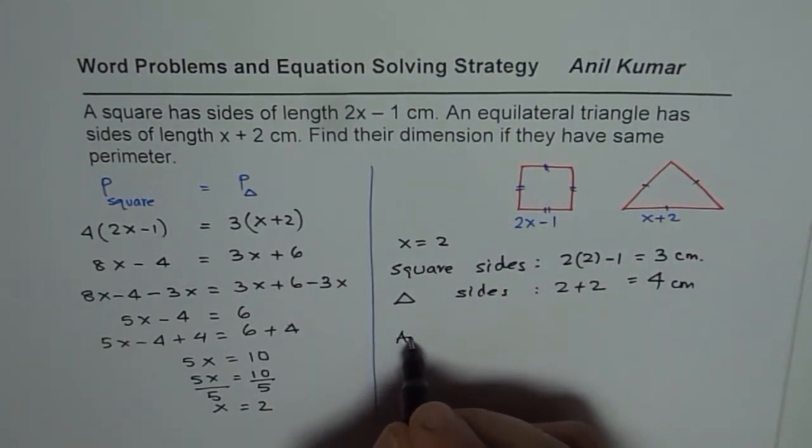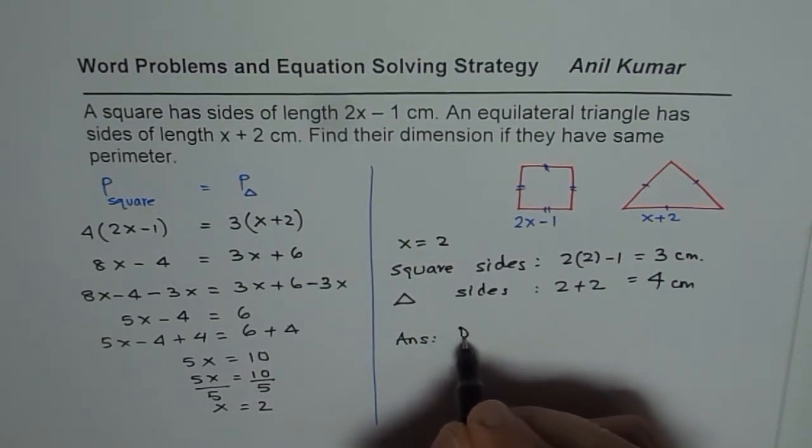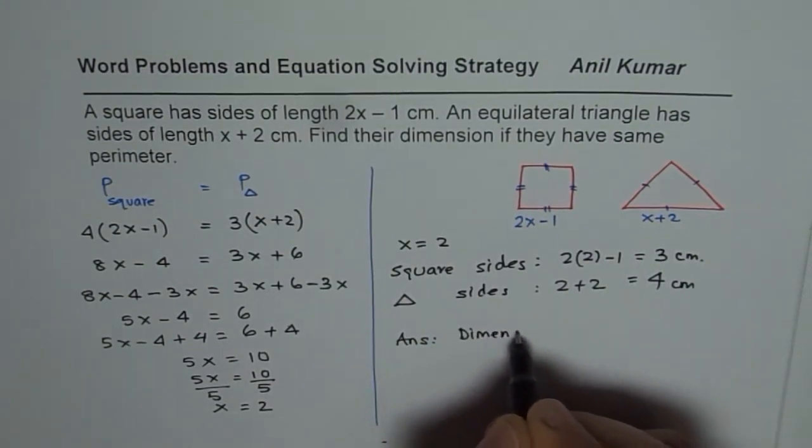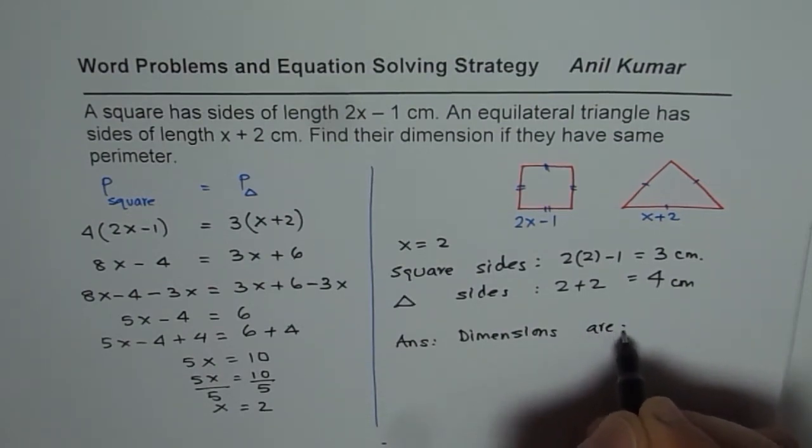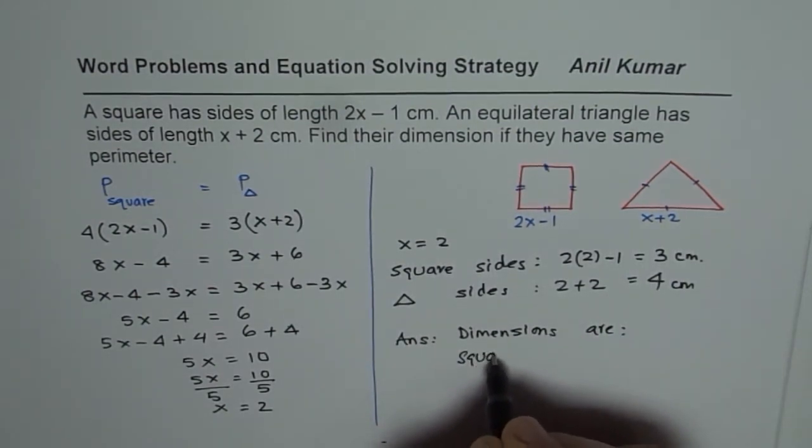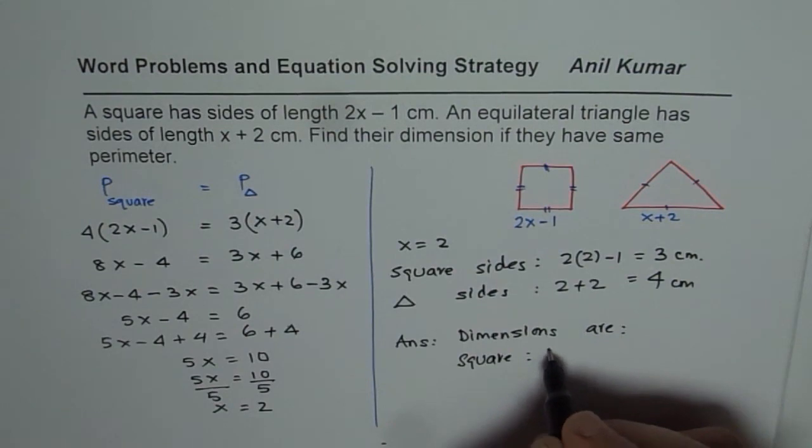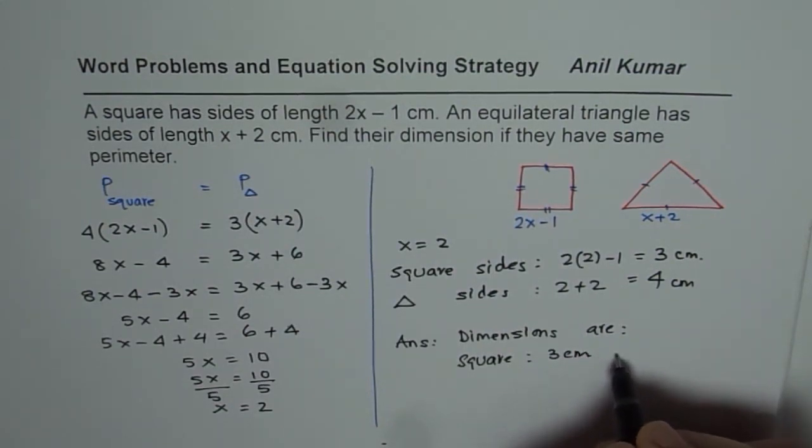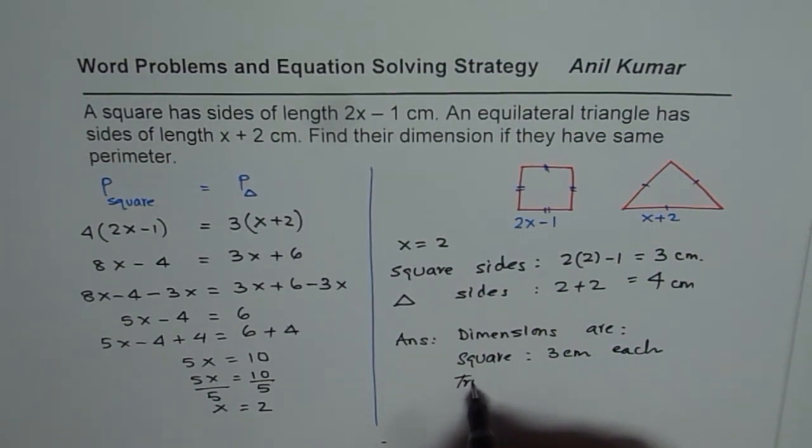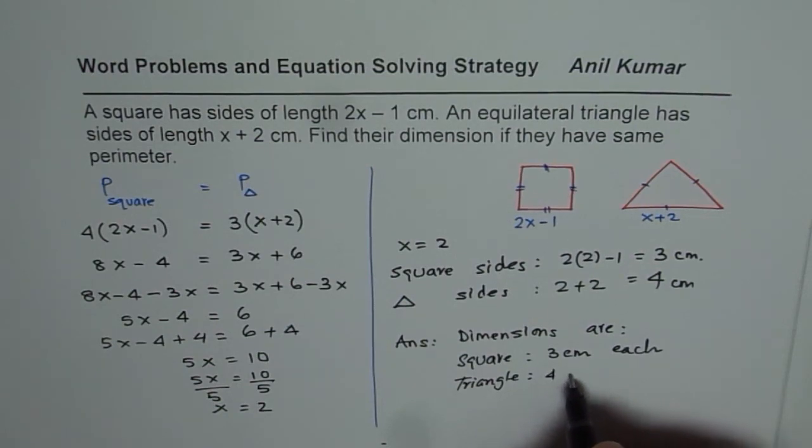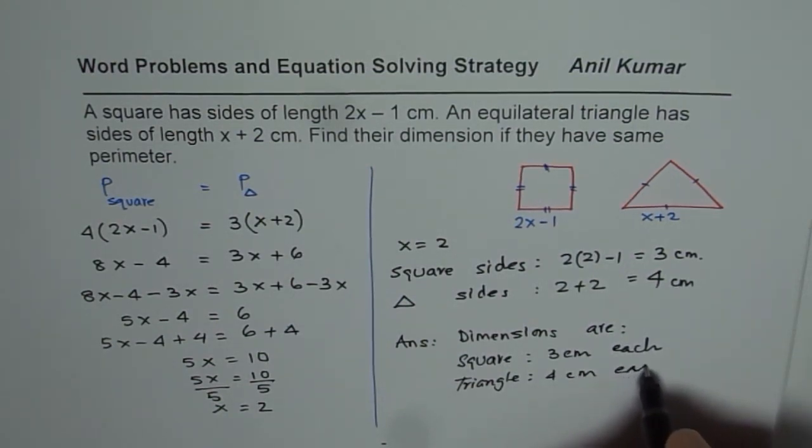So we get our answer, that dimensions are: for square 3 centimeters each, and for triangle 4 centimeters each.